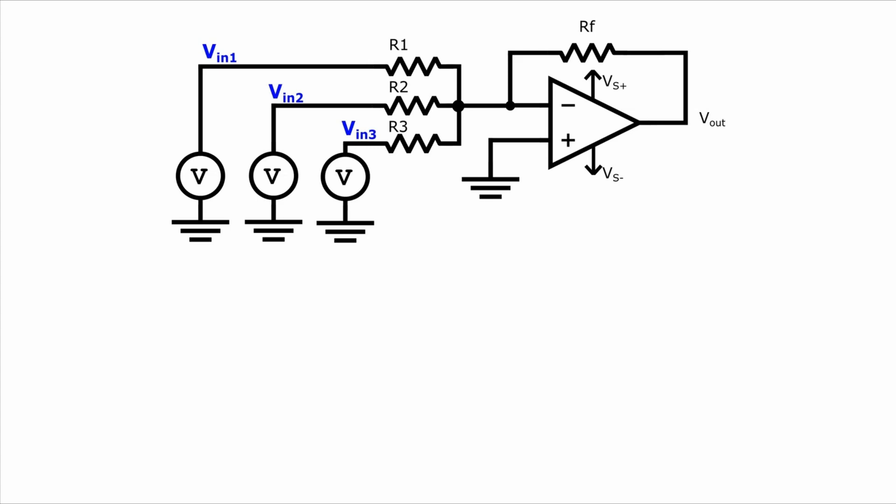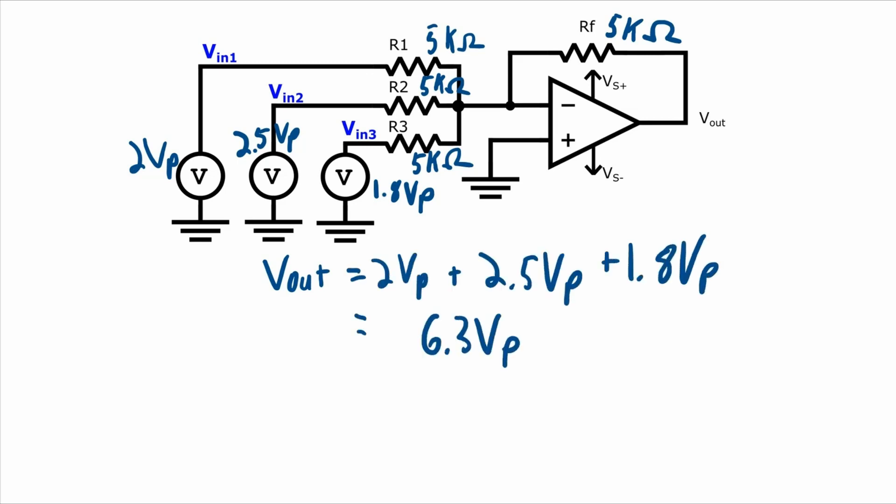All right, let's look at another example, this time with an inverting summing amplifier. Now let's say all the resistors are at 5 kiloohms. VIN1, VIN2, and VIN3 are all in phase with each other. VIN1 has a 2 volt peak, VIN2 has a 2.5 volt peak, and VIN3 has a 1.8 volt peak. Oh yeah, RF also needs to be 5 kiloohms, so this means Vout will be the sum of my three inputs. But let's not forget that this is an inverting amplifier, so my output is going to be out of phase, 180 degrees out of phase with the inputs.